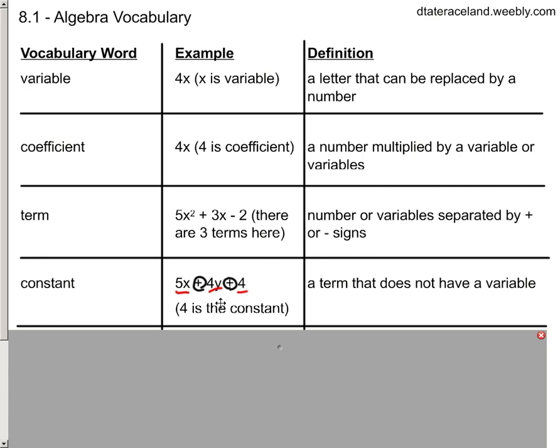Here's our third term, and there's no variable with it. It's just a number, so we would call that the constant. Our constant is the number 4, not because the 4 is here - no, because that's got a variable. We're calling the constant 4 because this is the number that has no variable. It's a term that has no variable.